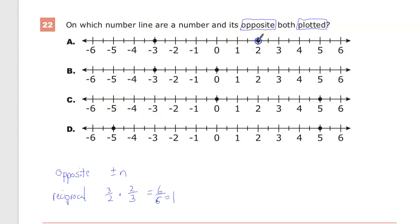Negative 3 and 2. Those are not opposites. Because negative 3 plus 2 is negative 1. So that's out. B, negative 3 and 0. Well, negative 3 plus 0 is negative 3, so that's out.